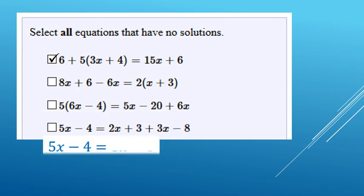Last one, we've got the 5x minus 4, and then we need to add like terms. So we're going to have the 2x plus 3x makes 5x, and then the 3 minus the 8 makes a minus 5.